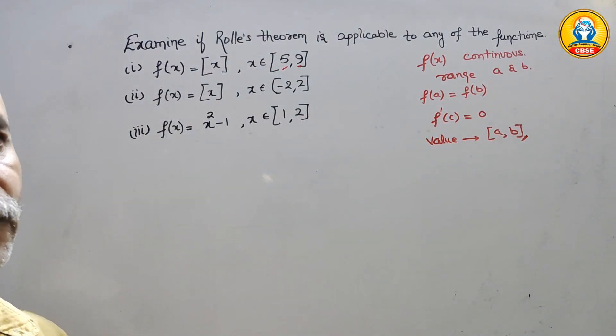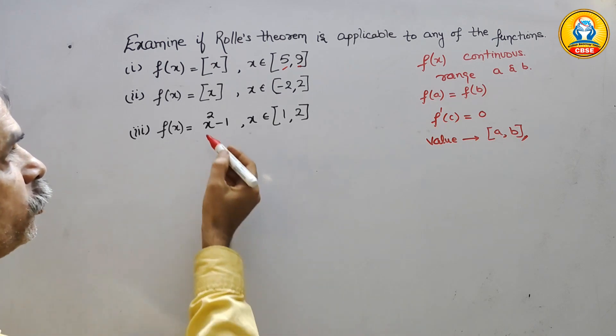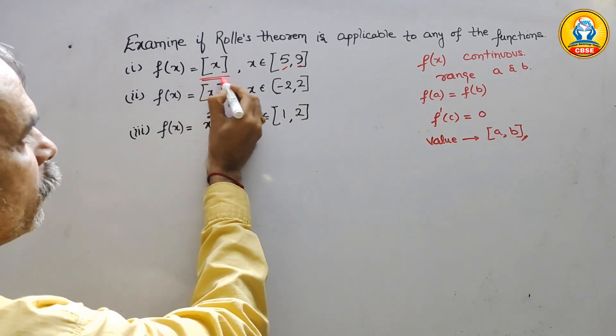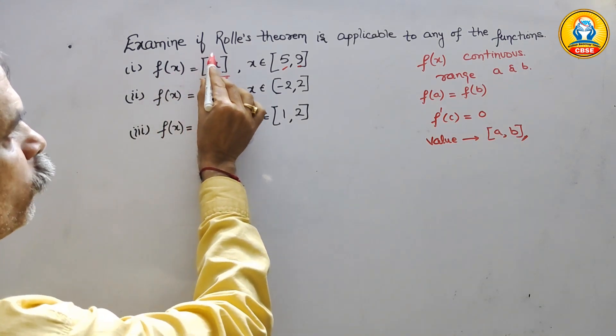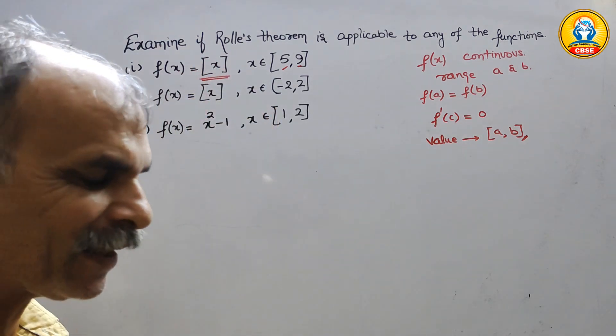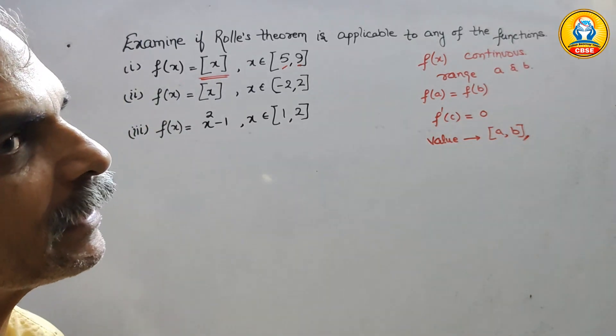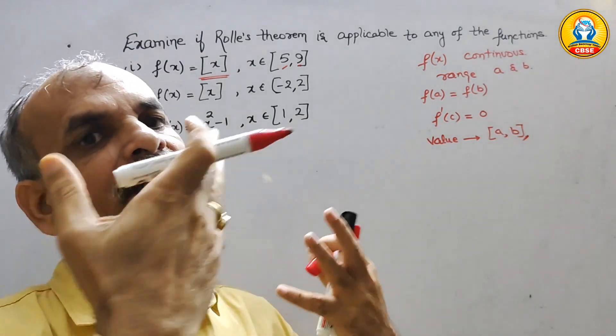Now, first we will check one by one. First is you can see here F(x) is equal to what is this big bracket and X is what? We can say it is a greatest integer.